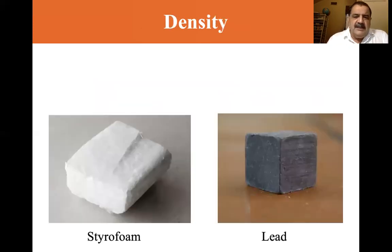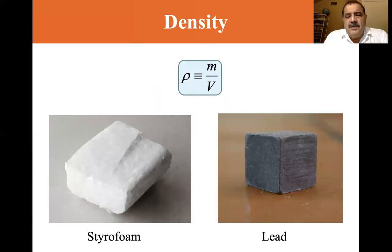Density. Density is a definition. It's mass divided by volume. Density is specified as rho, the Greek letter rho. Rho is defined as the mass divided by the volume. We assume that this styrofoam chunk and this lead chunk are of the same volume. Which is more dense? Of course, the lead is more dense than the styrofoam.